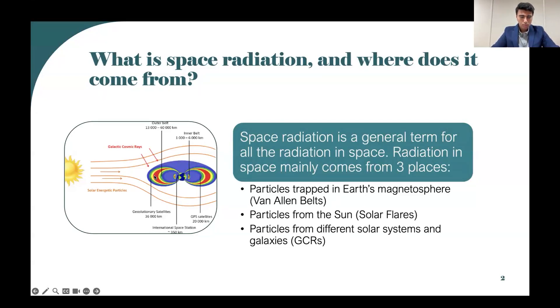the blue, red, and yellow rings around Earth are the Van Allen belts. You can see the galactic cosmic rays coming in from the side and solar flares and solar wind coming in from the Sun.